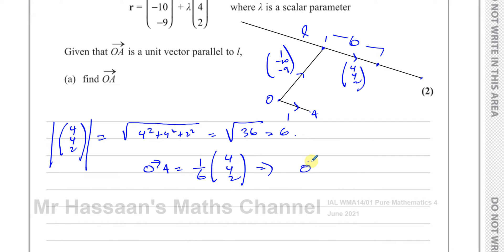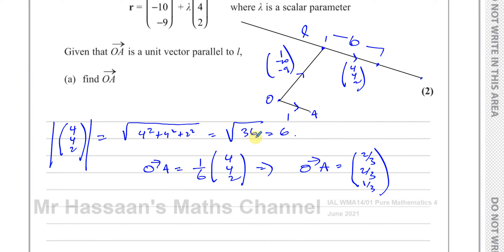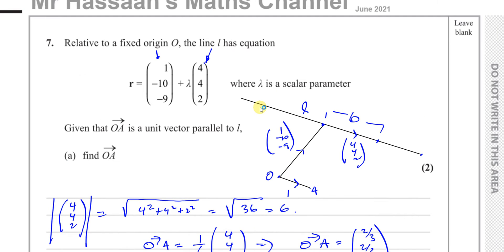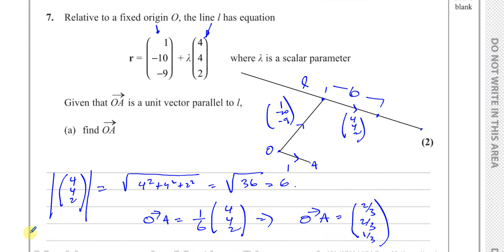That leads to the conclusion that OA equals one-sixth of (4, 4, 2), which gives (4/6, 4/6, 2/6), simplifying to (2/3, 2/3, 1/3). This vector is one unit long and parallel to the line L. That's part A completed.